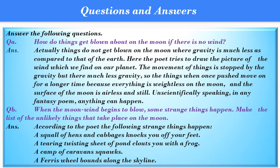Question B: When the moon wind begins to blow, some strange things happen. Make a list of the unlikely things that take place on the moon. Answer: According to the poet, the following strange things happen on the moon. A squall of hens and cabbages knocks you off your feet. A tearing twisting sheet of pond clouds you with a frog. A camp of caravans squawks. A ferris wheel bounds along the skyline.